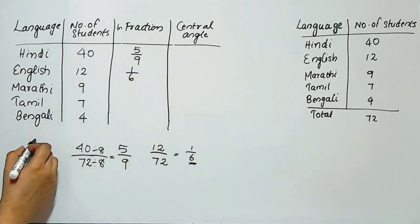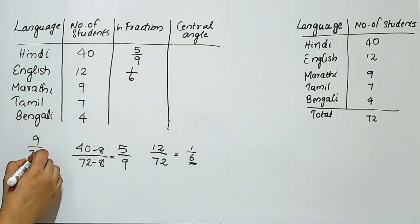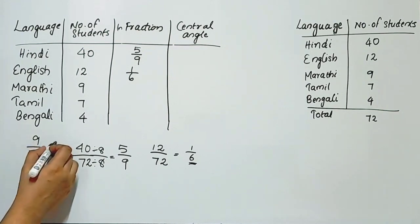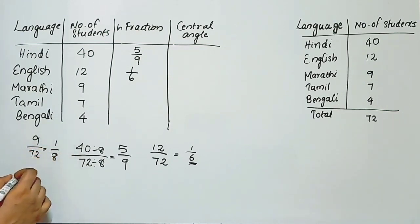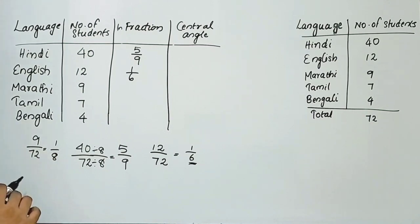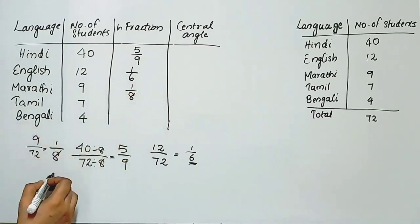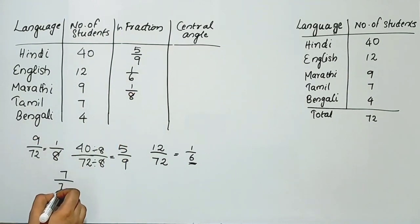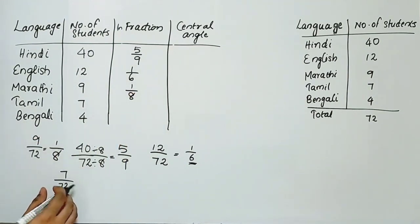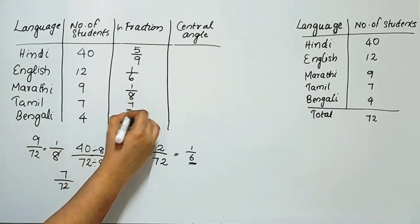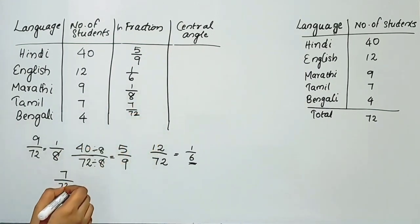For Marathi: 9 by 72. Since 8 into 9 is 72, the fraction simplifies to 1 by 8. For Tamil: 7 by 72. Since 7 and 72 share no common factor, the fraction stays as 7 by 72.